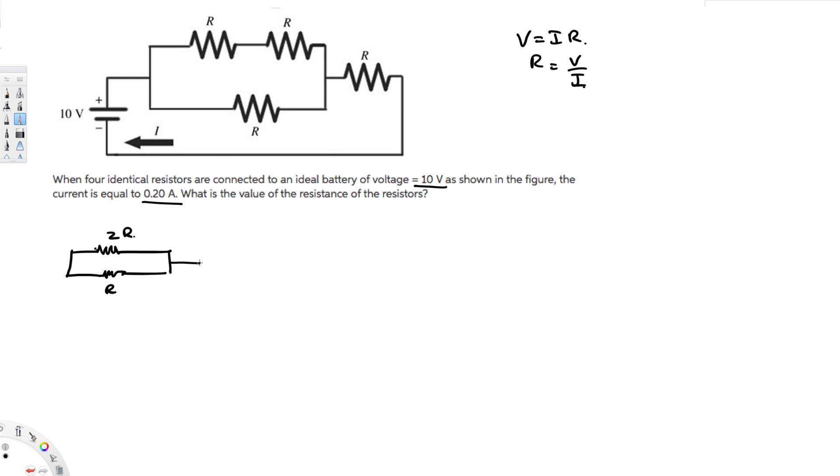And then here we have another R. Now when we have something in parallel, we have to use: one over Rx equals one over 2R plus one over R. Here we can take 2R as the common denominator. Therefore this is going to be 1, this is going to be 2, and that's going to give us 3 by 2R. Therefore, Rx is equal to 2R divided by 3.